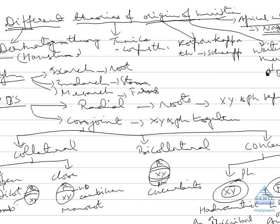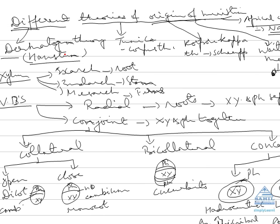Now comes the dermatogen theory, this was originally given for root, however it is valid for shoot apex also. Now then comes tunica corpus theory, this was given by Schmidt for shoot apex, however it is also valid for root apex.